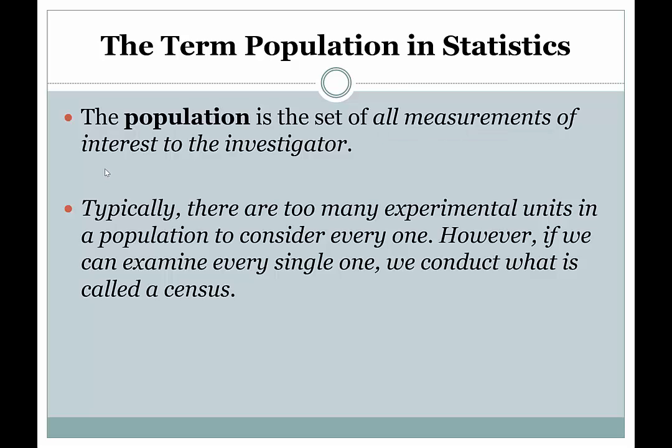For example, instead of saying I'm interested in college students living in the United States today, I could say I'm interested in the heights or ages of all college students living in the United States today. Maybe I want to know what the average age of college students in the nation is. In that case, I'm interested in the ages of each individual college student, and I can list that in an Excel spreadsheet. The full set of measurements that I'm interested in, in an Excel spreadsheet, would be my population.